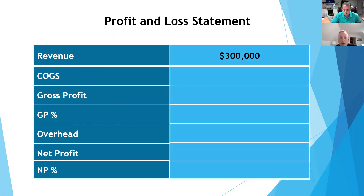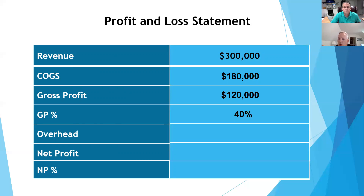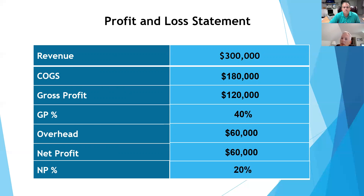Let me give a quick example. Revenue: $300,000. Your cost of goods sold is $180,000. That means your gross profit would be $120,000, or a gross profit percentage of 40%. Now you've got to take out your overhead expenses, which gives you a net profit of $60,000, or 20%. So you sold $300,000 and take home a 20% profit.